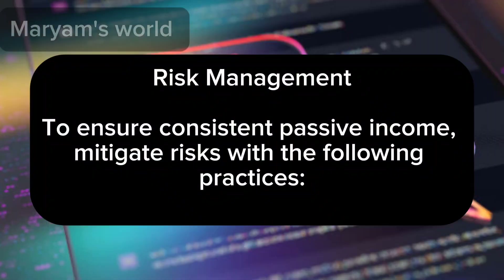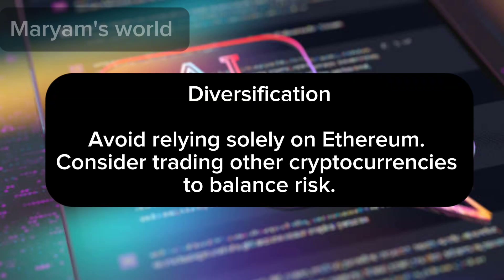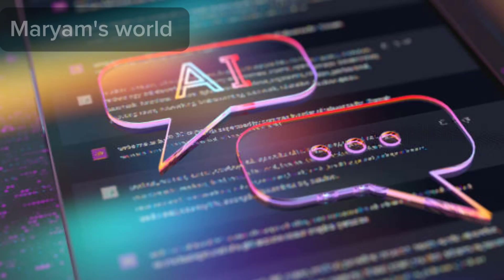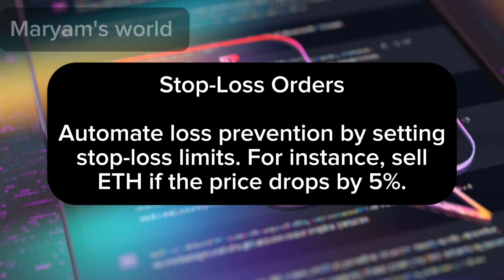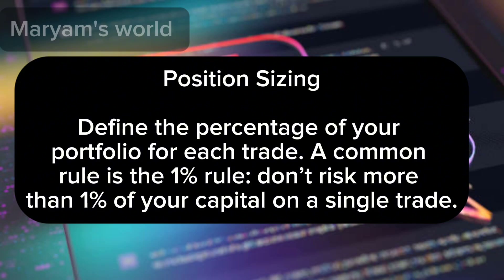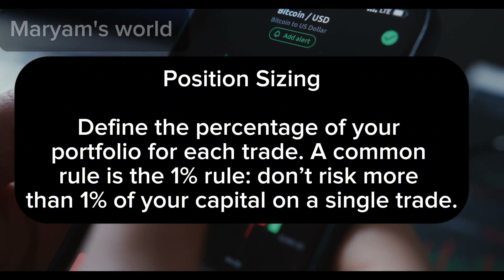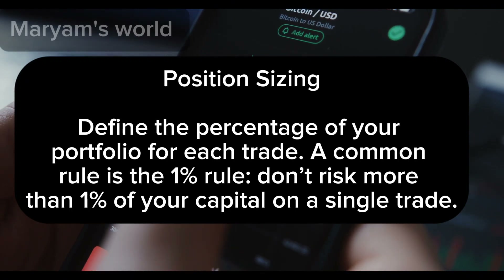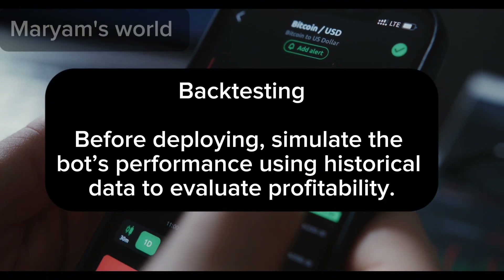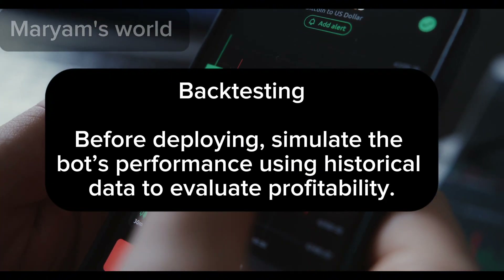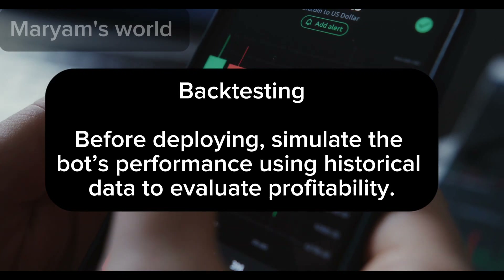Risk management: to ensure consistent passive income, mitigate risks with the following practices. Diversification — consider trading other cryptocurrencies to balance risk. Stop-loss orders automate loss prevention by setting stop-loss limits; for instance, sell ETH if the price drops by 5%. Position sizing defines the percentage of your portfolio for each trade; a common rule is the 1% rule — don't risk more than 1% of your capital on a single trade.